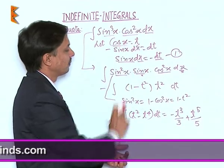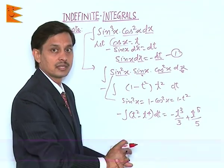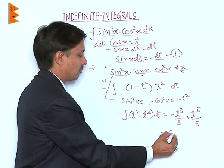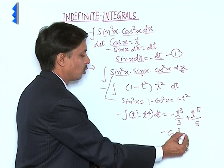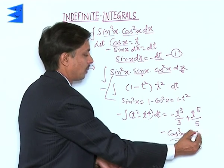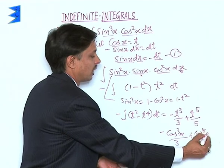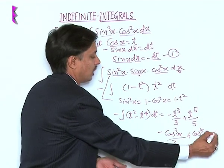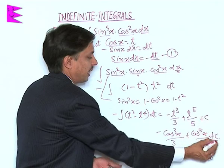But in place of t actually we need to put cos x. So this become minus of cos³x upon 3 and plus of cos⁵x upon 5 plus integrating constant c.